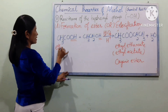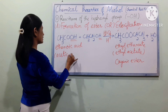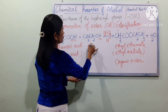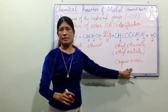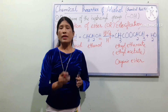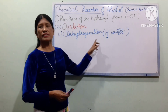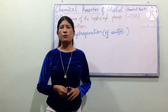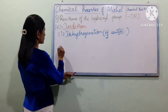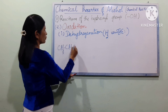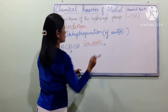Ethanoic acid (acetic acid) can react with ethanol (C2H5OH) in an esterification reaction. Using an organic acid such as ethanoic acid with alcohol in the presence of a catalyst produces an ester and water.